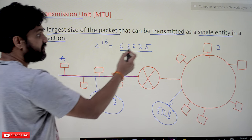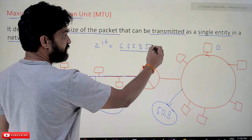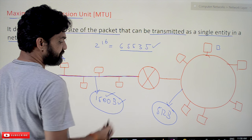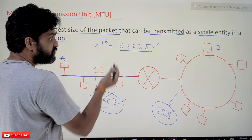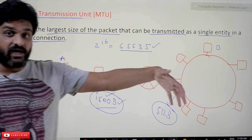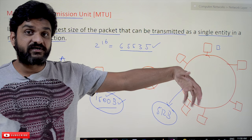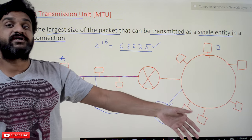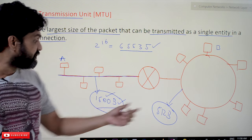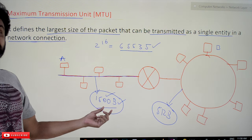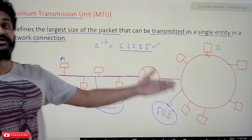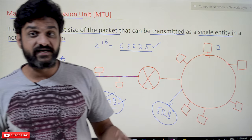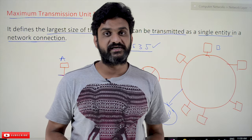Now, how can this wide gap in capacity be managed during transmission? For example, a network layer packet of up to 65,000 bytes needs to be transmitted over a data link layer that has a capacity of only 1500 bytes. We will try to understand this in our next class, which covers segmentation and fragmentation.